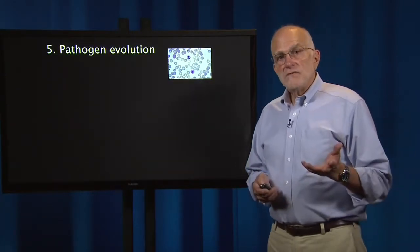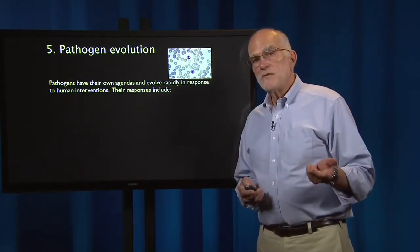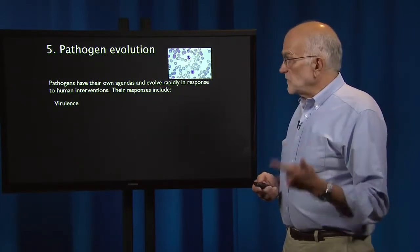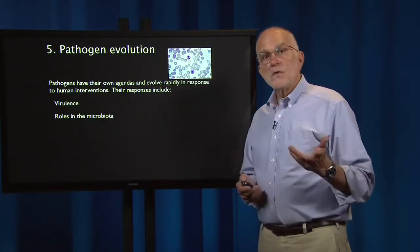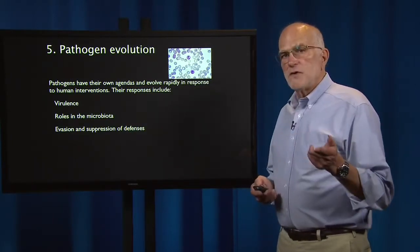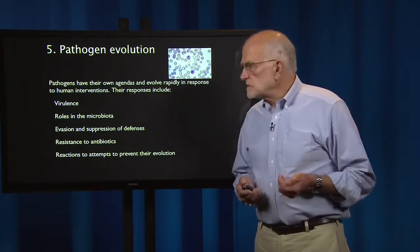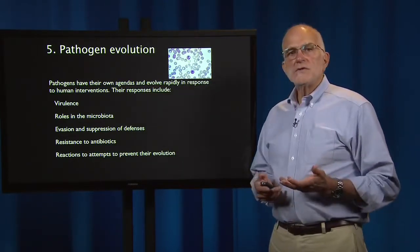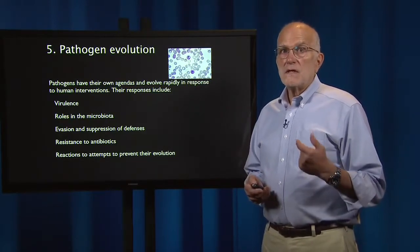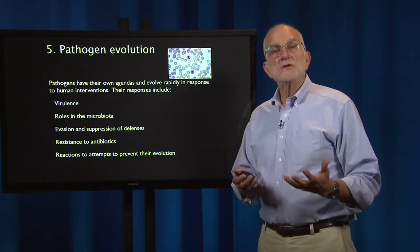Pathogens evolve, and they evolve quite rapidly. They have their own agendas and they respond to human interventions. Their responses include virulence, their roles in the microbiota, the evasion and suppression of defenses, resistance to antibiotics, and reactions to attempts to prevent their own evolution. So they are a flexible and highly adjustable population.